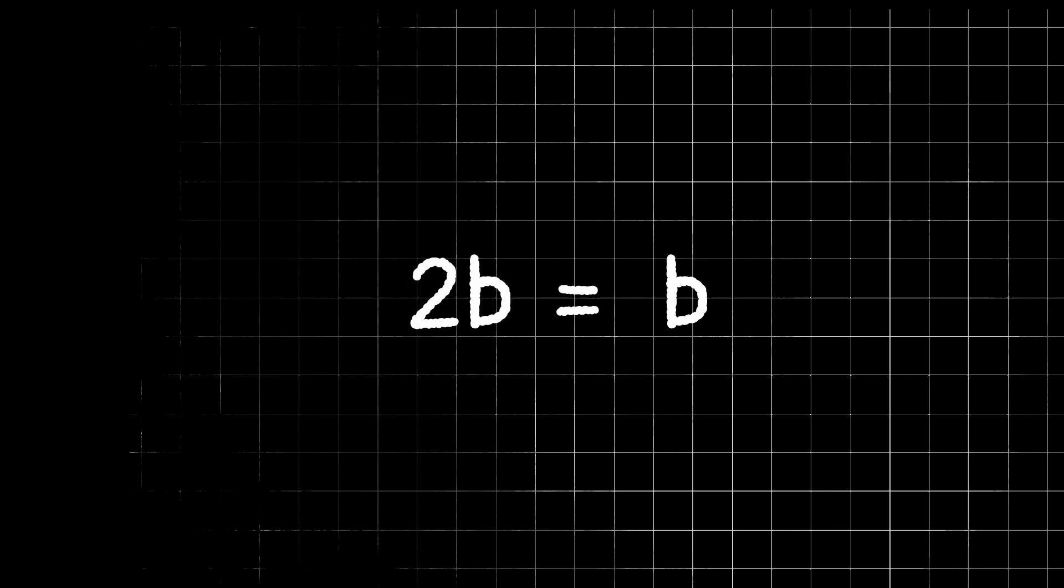Since both sides of our equation contain a b, we can divide both sides by b, leaving us with 2 equals 1.